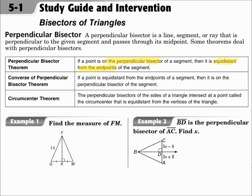The converse of that is also true. The circumcenter theorem says that the perpendicular bisectors of the sides of a triangle intersect at a point called the circumcenter, which is equidistant from the vertices of a triangle. Be prepared to make an equation where those equal measures equal each other and then solve for the variable. Also be prepared for right angles because they're perpendicular, so maybe an angle measure equals 90.